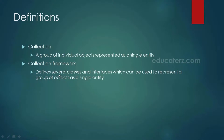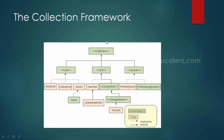So what is basically a collection? A collection is nothing but a group of individual objects represented as a single entity. And the collection framework is a set of classes and interfaces which can be used to represent a group of objects as a single entity.